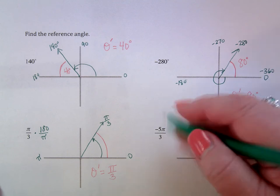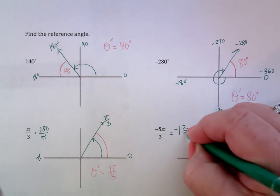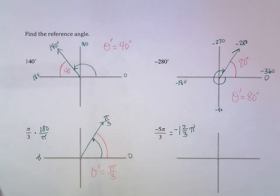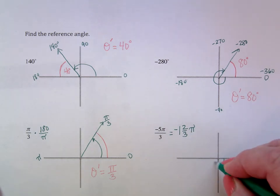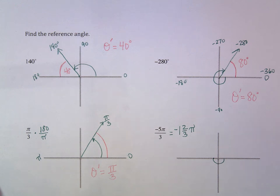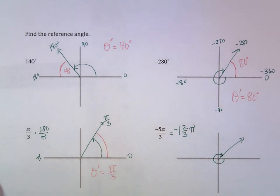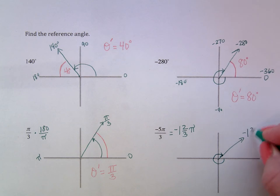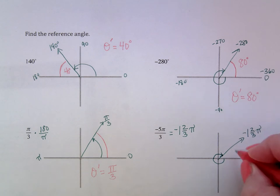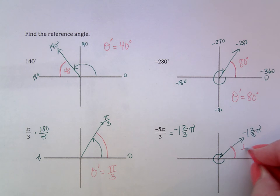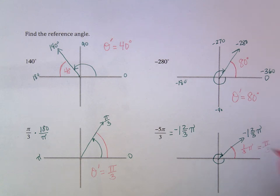Last radian example: negative 5π over 3. That's like negative 1 and 2 thirds pi. Going 1 pi in a negative direction, then 2 thirds more — not quite closing the circle. To go from 2 thirds of the way, it takes 1 third more to close up to the x-axis. So the reference angle is 1 third pi, same as pi over 3.